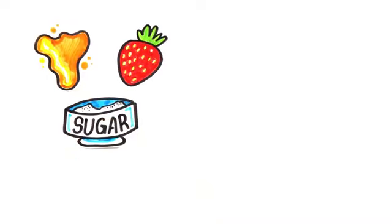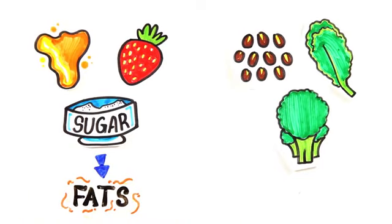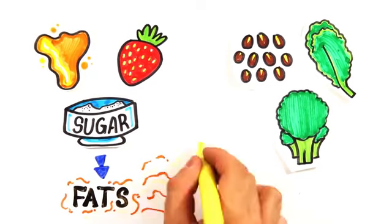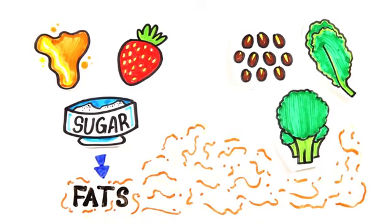But the type of carbs you eat do matter. Those from simple sugars like honey, fruit, or sugar are more readily turned into triglycerides or fat than complex carbs like whole grains and veggies. If you consistently eat way more than necessary, and most calories are from simple carbs, then these will be converted to fat.